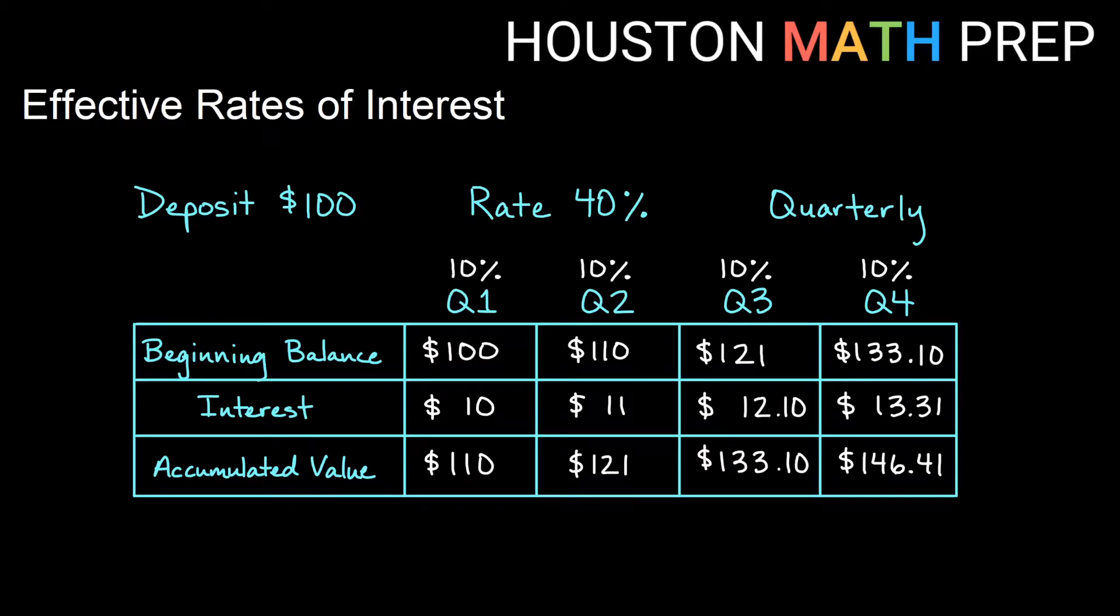When we went through compound interest in our compound interest video, you'll notice that we ended up with more interest than actual 40% if we just look at it simply. 40% of $100 at the end of a year should be $40, and when we compound the interest we get more than $40 in interest. If I got $40 in interest on $100, my ending balance should be $140 exactly. We get $146.41 here.